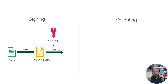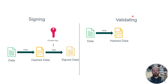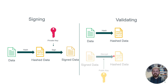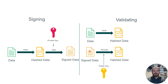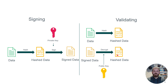Now we have the signed data. How can we validate it? First we get the data from the user — the data that I received — and I want to verify it is what the sender sent. I hash it to generate a hash, then I decrypt the signed data. The result of this decryption is the hash data that was created during signing. Using the public key, if we decrypt the signed data, the result should be that original hash.